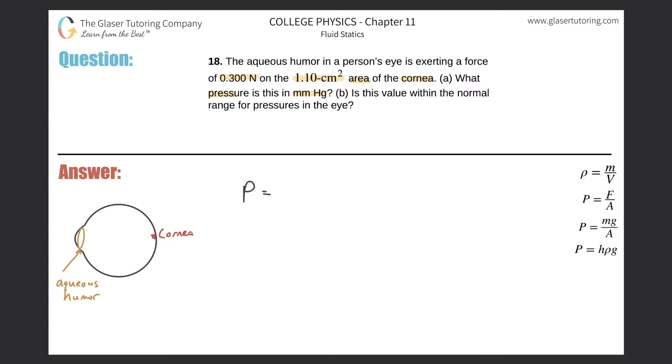Now let's take a look at the pressure. The pressure here is going to be equal to the force divided by the area. They want it in millimeters of mercury, so why don't we first find the pressure in Pascal and then we'll convert it.